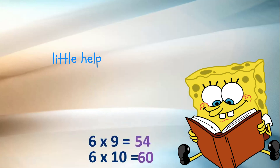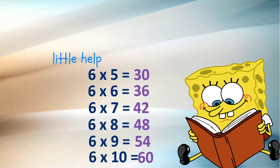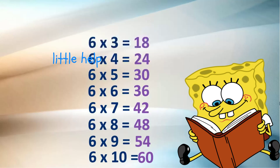6 nines are 54, 6 eights are 48, 6 sevens are 42, 6 sixes are 36, 6 fives are 30, 6 fours are 24, 6 threes are 18, 6 twos are 12, 6 ones are 6.